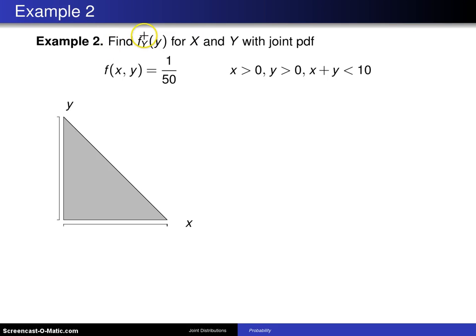In this example, we find the marginal distribution for y for random variables x and y with joint PDF f(x,y) equals 1/50, and that's for x greater than 0, y greater than 0, and x plus y less than 10.